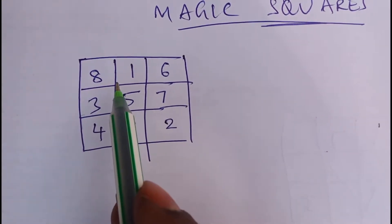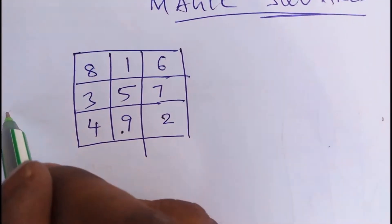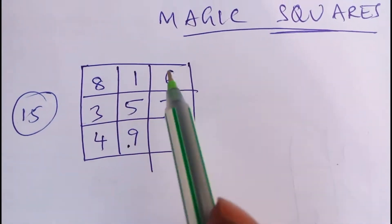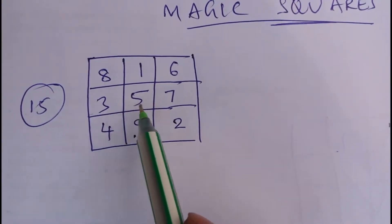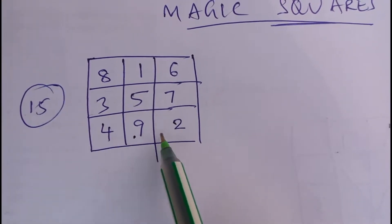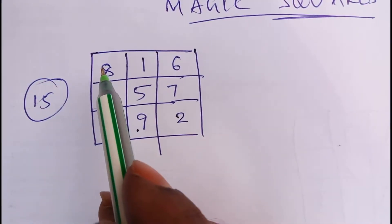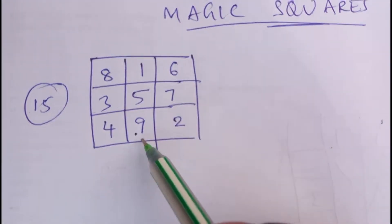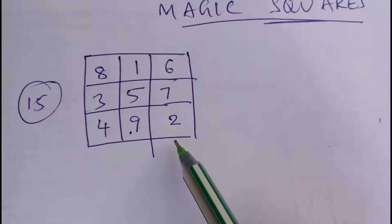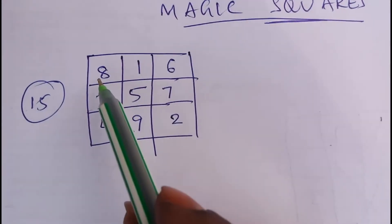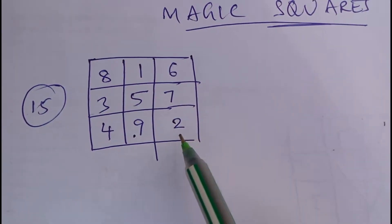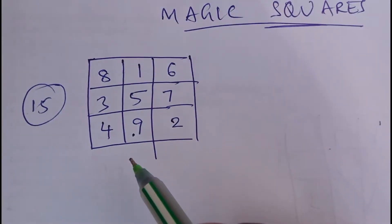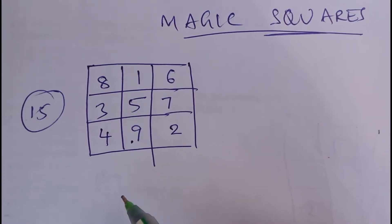Now you can count: eight plus one is nine, nine plus six is fifteen. For this magic square, the logic gives fifteen. Counting the rows: nine plus six is fifteen, three plus five is eight, eight plus seven is fifteen, four plus nine is thirteen, thirteen plus two is fifteen. For the vertical columns: eight plus three is eleven, eleven plus four is fifteen, six plus nine fifteen, and so on - fifteen. And diagonally: eight plus five is thirteen, thirteen plus two is fifteen, and four plus five is nine, nine plus six is fifteen. Any way you count, the total is always fifteen.